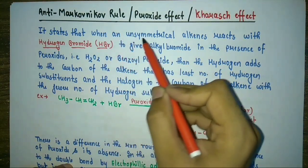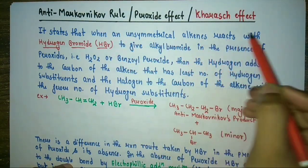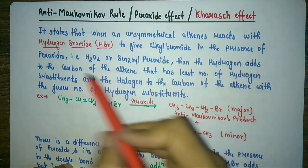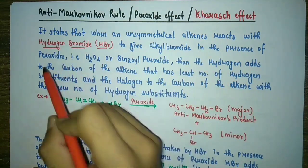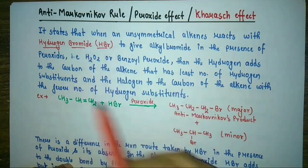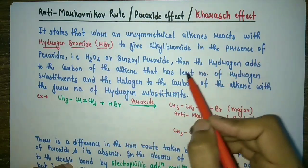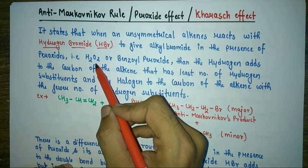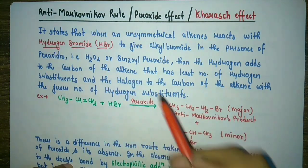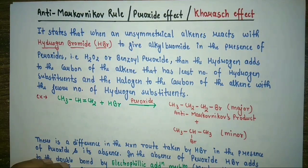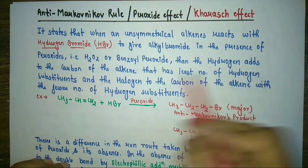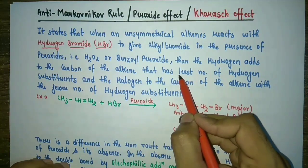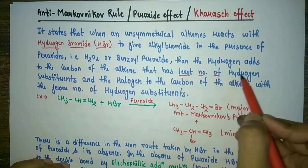Anti-Markovnikov's rule states that when an unsymmetrical alkene reacts with HBr in the presence of a peroxide — such as H2O2 (hydrogen peroxide) or benzoyl peroxide — to give an alkyl bromide, the hydrogen adds to that carbon atom of the alkene that has the least number of hydrogen atoms. This is the main difference: this reaction takes place in the presence of peroxide.